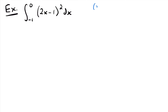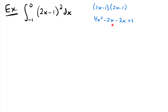So if we do that on the side here, we'll have (2x minus 1)(2x minus 1). Using the FOIL method: 2x times 2x gives 4x squared; then 2x times negative 1 gives minus 2x; then negative 1 times 2x gives another minus 2x; and negative 1 times negative 1 gives positive 1. Adding the two like terms negative 2x and negative 2x, we get 4x squared minus 4x plus 1.